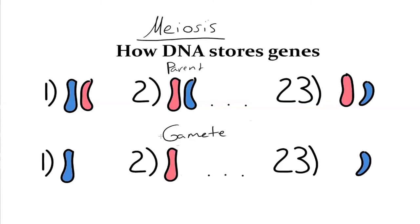At the end of meiosis, you're going to end up with 23 chromosomes total in a gamete, from the 46 chromosomes total in the parent cell that divided to make it.